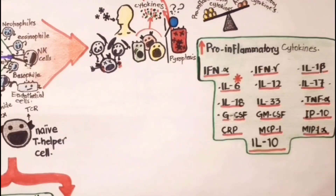IL-6, IP10, IL-10, TNF-alpha, MIP-1, MCP-1-alpha, and GCSF levels positively correlate with disease severity.